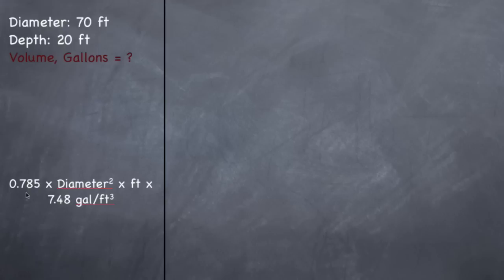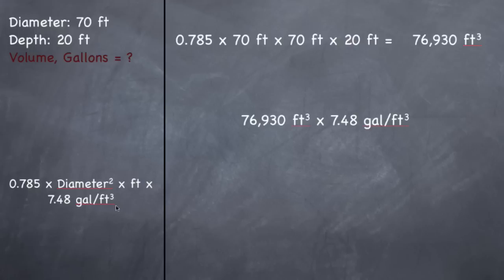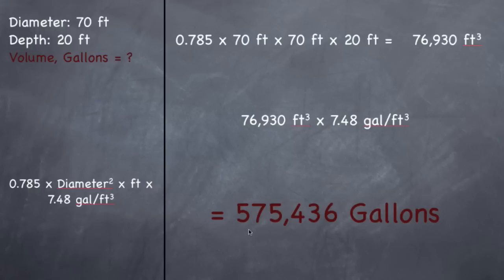For the volume of a circular tank, the formula is 0.785 — a constant — times diameter squared, times depth, times 7.48 gallons per cubic foot. So: 0.785 times 70 feet times 70 feet (diameter squared) times 20 feet equals 76,930 cubic feet. Multiplying by 7.48 gallons per cubic foot gives you 575,436 gallons.